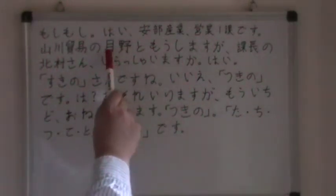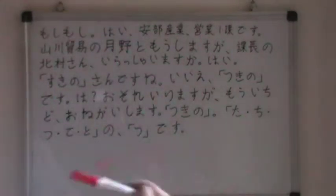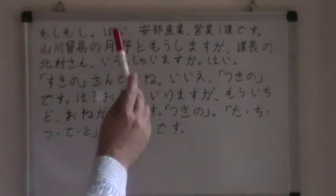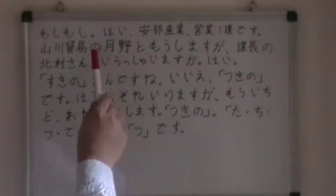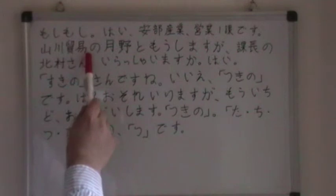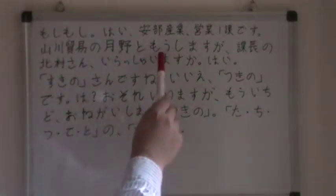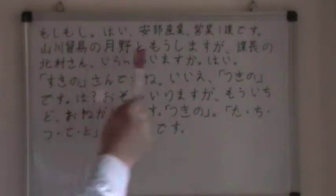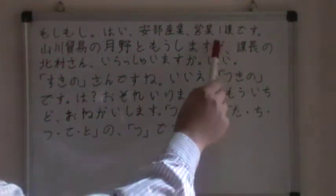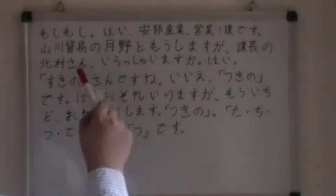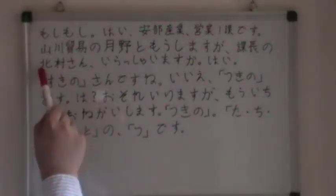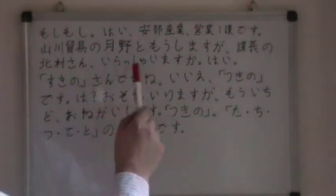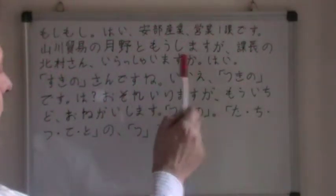I am Tsukino. Well, in English we would say I am Mr. Tsukino, but we just say Tsukino without San here. I am called Tsukino of Yamakawa Trading Company. And is Mr. Kitamura — the section manager Kitamura — is he there?